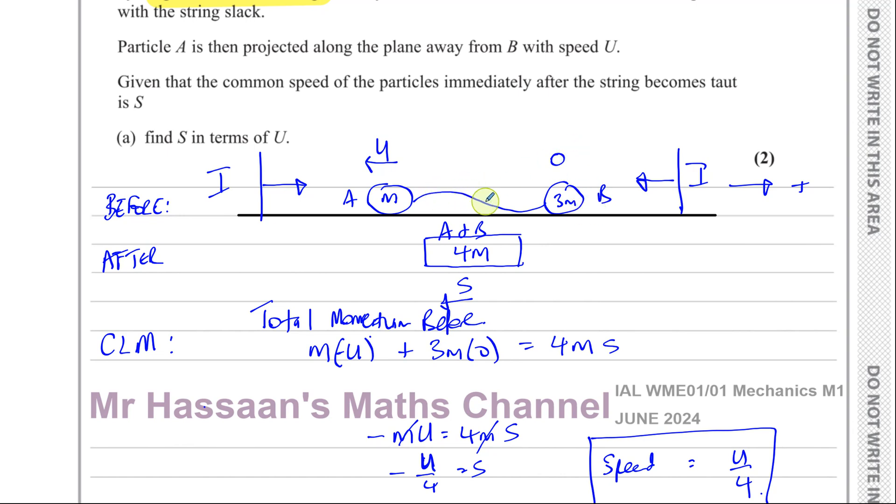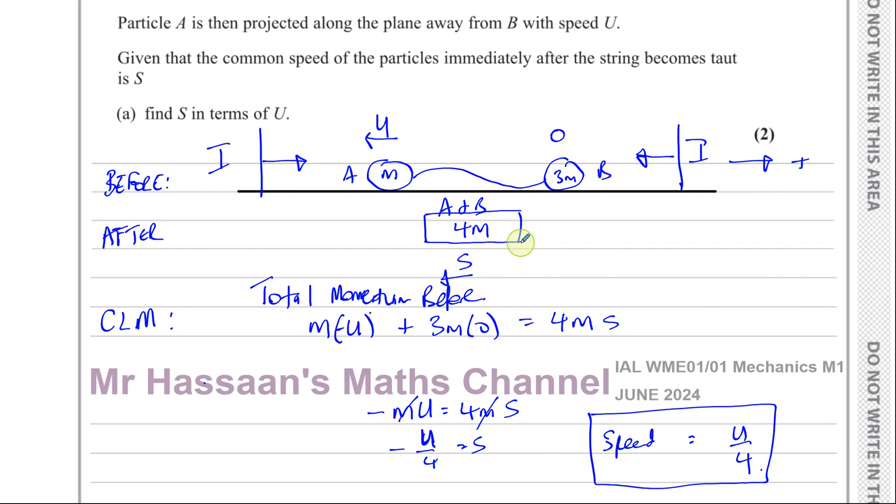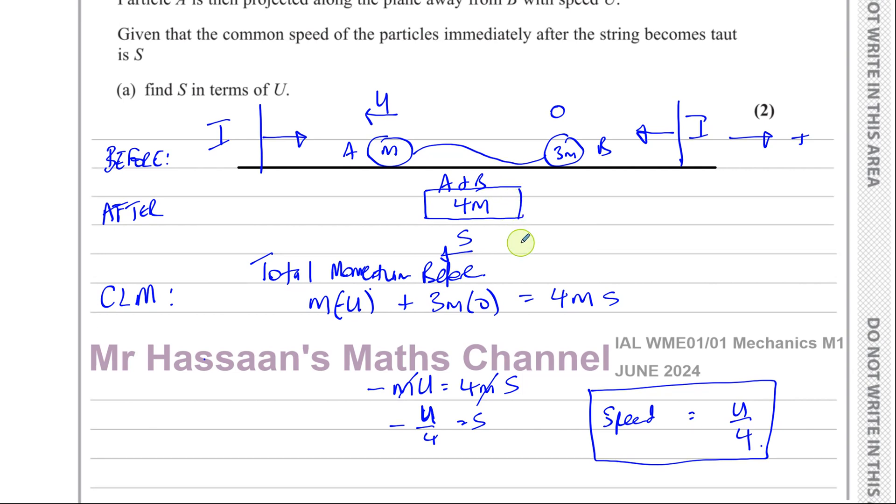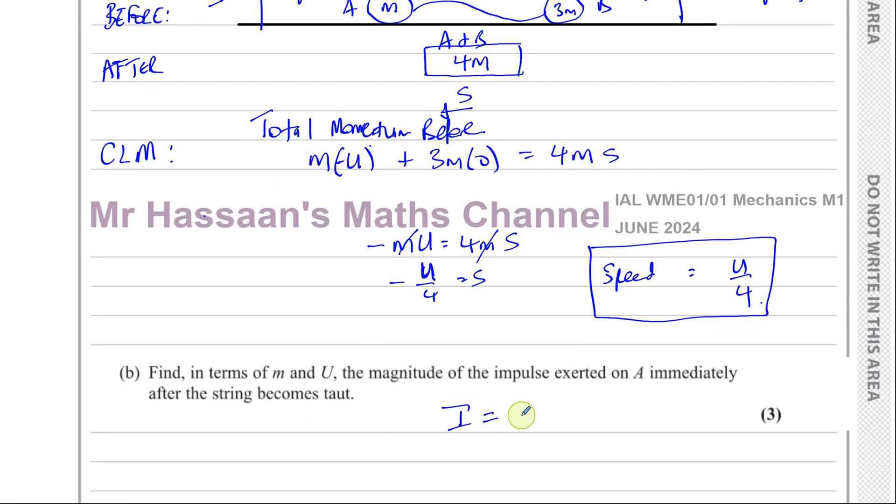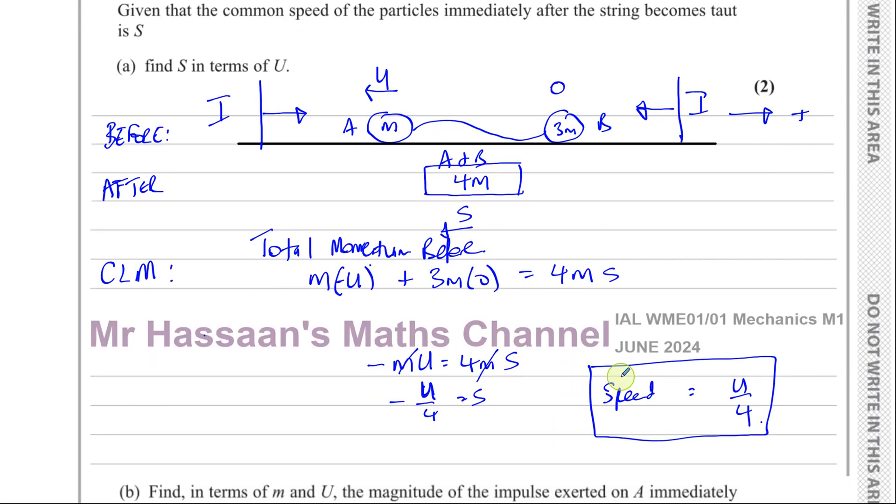So we can use the fact that impulse is equal to the change of momentum. You know, the change of momentum in order for us to work out this impulse. So we know that the impulse is equal to the mass of the object times the final velocity minus the initial velocity. The change in momentum. Change in momentum of an object tells you what impulse caused that change in momentum. So now, we can consider either A or B. It really doesn't matter. We have the same information for both of them. We have the information about the speeds before and after for both of them. So it doesn't really matter which one we use.